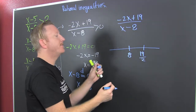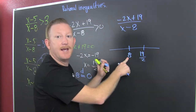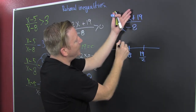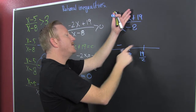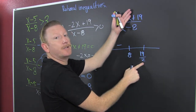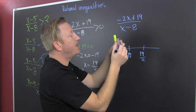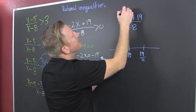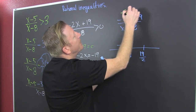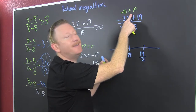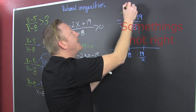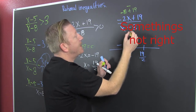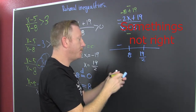I test something left of 8, so I use 0. Looks like that's going to be negative. What's bigger than 8 but less than 10? Let's use 9. Plugging in 9: minus 18 plus 19 is positive in the numerator, and 9 minus 8 is also positive. A positive over a positive — that's going to be positive in the middle interval.